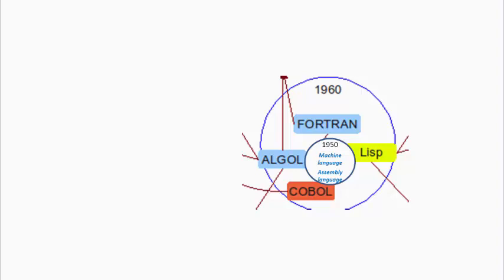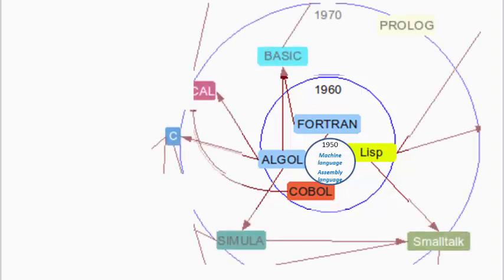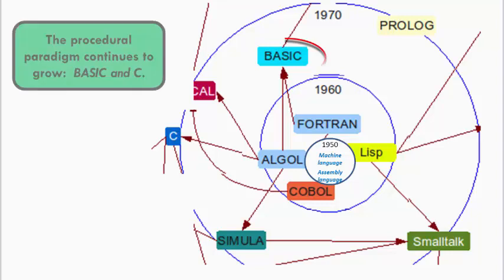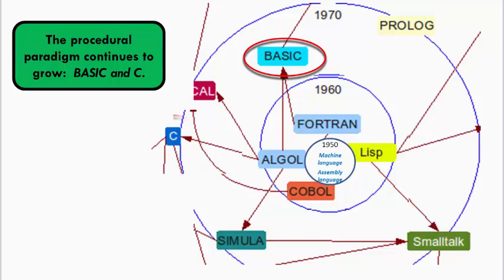And so as we moved into the 60s and 70s, other languages, some based on other paradigms, were developed. In the 1960s, the procedural paradigm continued, with BASIC bringing procedural programming to the masses. In the early 70s, the language called C appeared. It has had a strong influence on programming languages ever since, and remains one of the most commonly used programming languages today.